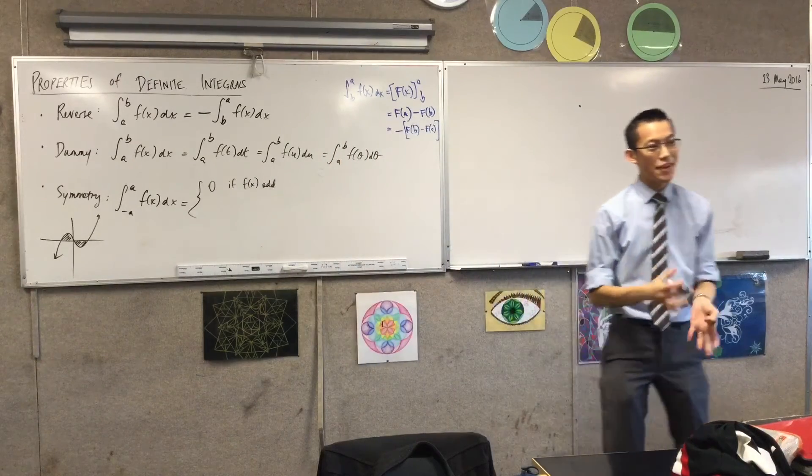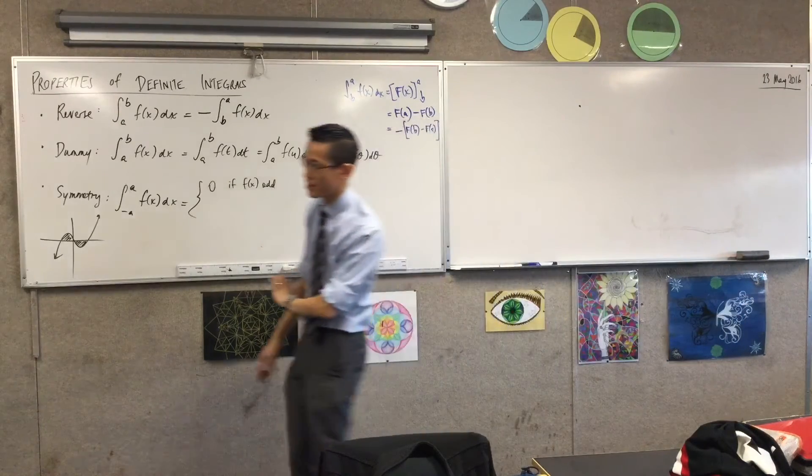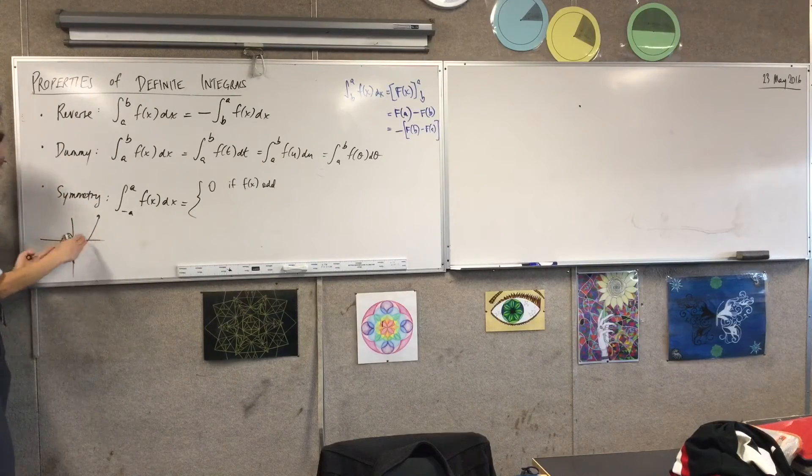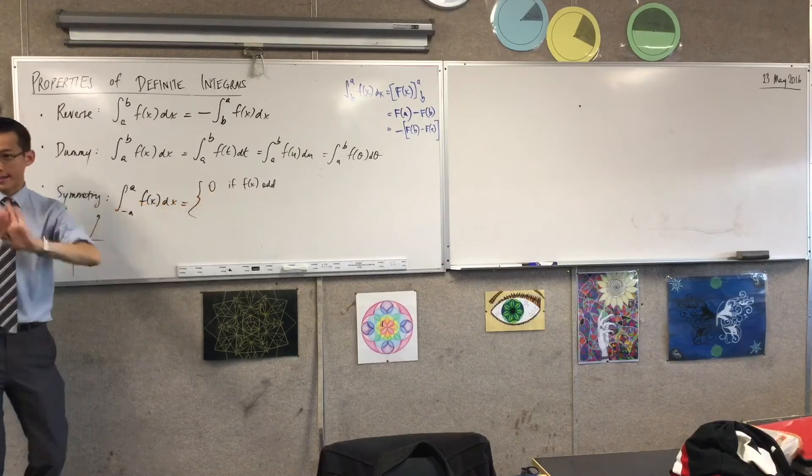On the other hand, if f is even, and you don't need me to draw any even function for you to demonstrate this, you've got the same, both positive or both negative areas on either side because you've got reflectional symmetry here. So, instead of getting zero and cancelling out, how are we going to articulate this?